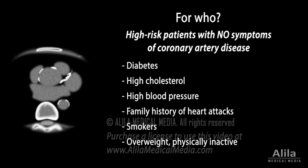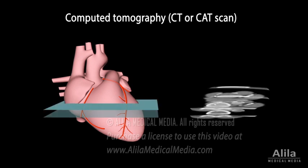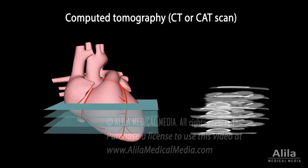Calcium score scans use a specialized x-ray technology called computed tomography, commonly known as CT or CAT scan, to produce multiple images of the heart. A computer program is then used to calculate the total amount of calcium deposits.